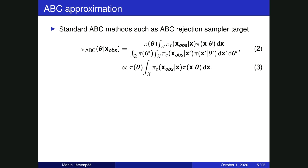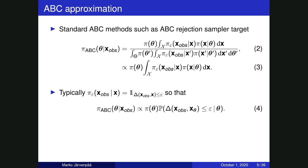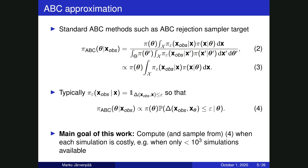Standard ABC methods target the ABC posterior shown in equation 2. We typically consider a 0-1 type of kernel function by epsilon, so that we can write the ABC posterior as proportional to the product of the prior and the probability that if we simulate at some parameter theta, then the resulting discrepancy evaluation is smaller than epsilon. The main goal of this line of work is to compute and sample from equation 4, or actually an approximation to equation 4, in a situation where each simulation is very costly — for example, with only 1,000 simulations available.